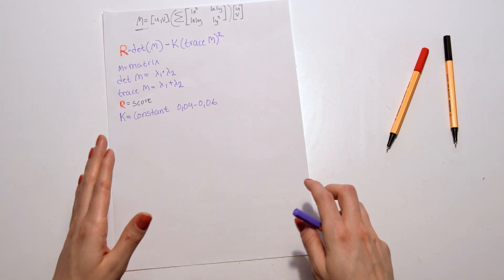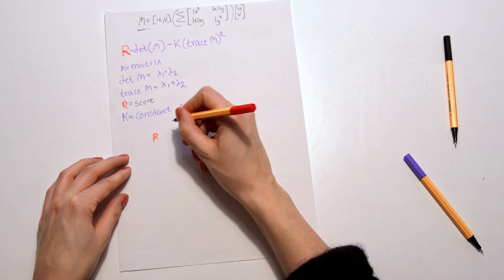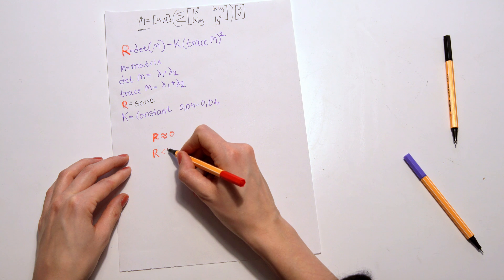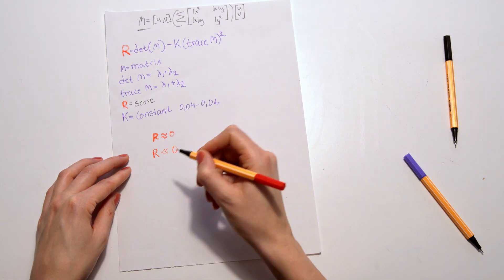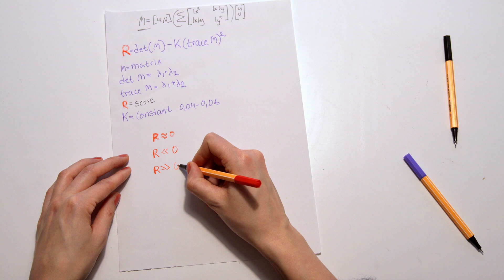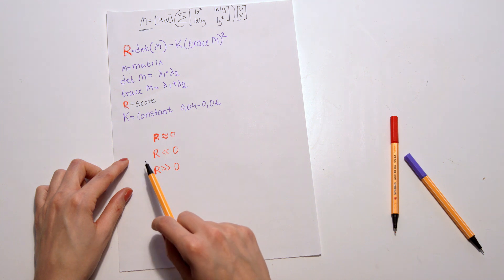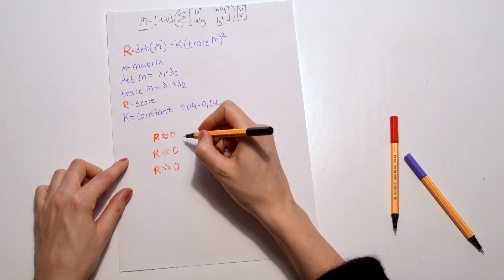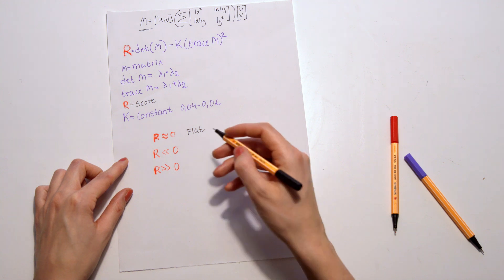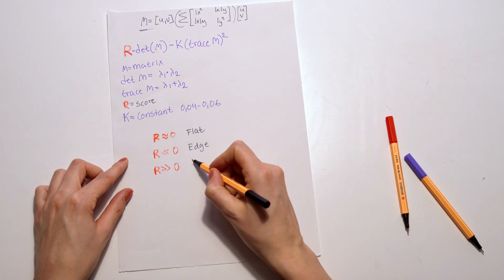But to be a little bit more exact, we can use the R value. So we can have when R is almost 0, when R is much less than 0, and we have another place where R is much bigger than 0. So when R is much bigger than 0, we know we have a corner.